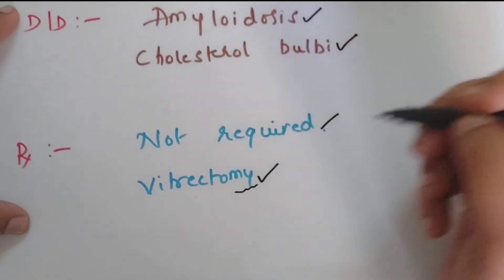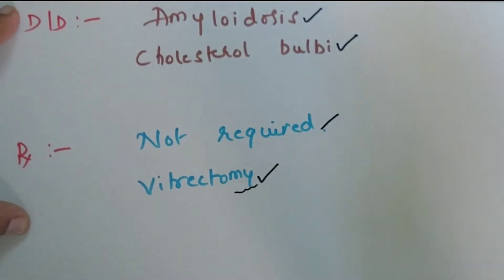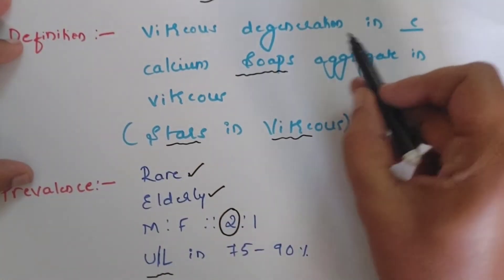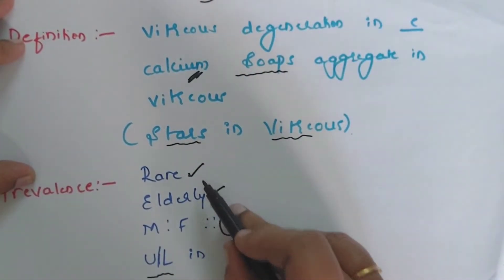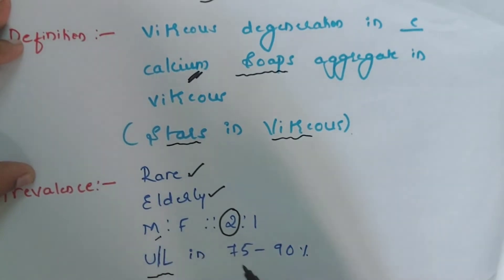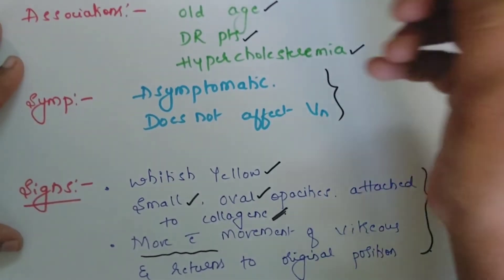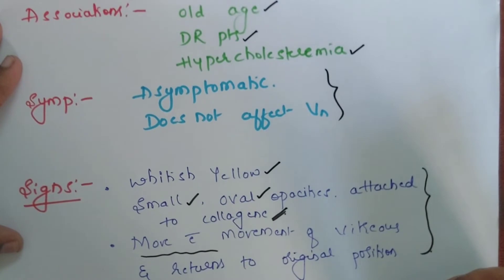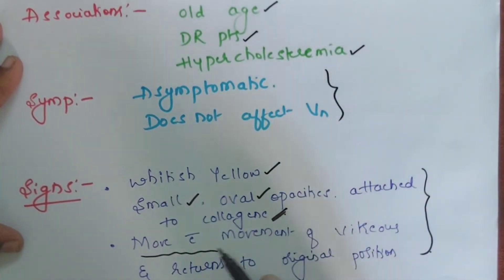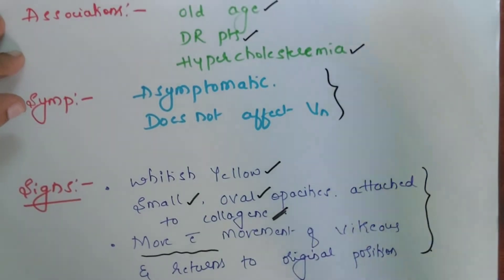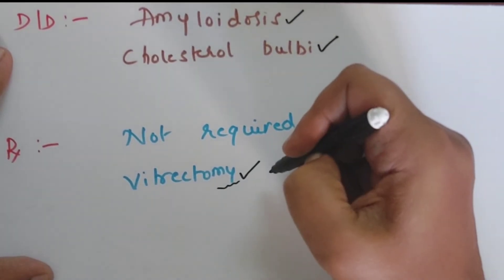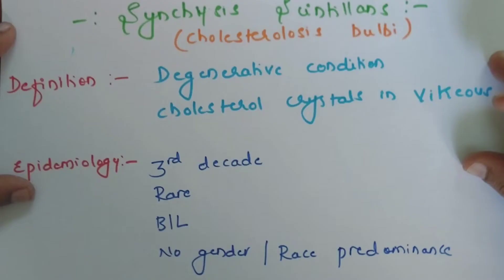To summarize Asteroid Hyalosis: it is a vitreous degeneration with calcium soap deposition, very rare, seen in elderly males, usually unilateral, associated with old age, diabetic retinopathy, and hypercholesterolemia. Usually asymptomatic. On fundus examination: whitish-yellow small oval opacities attached to vitreous collagen fibrils, moving with eye movement and returning to original position. Close differentials are amyloidosis and cholesterolosis bulbi. Treatment is generally not required; vitrectomy only if underlying retinal pathology needs treatment.